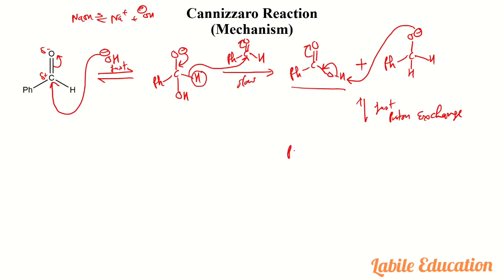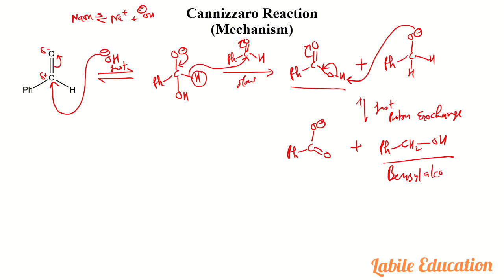We get the carboxylate ion and the alcohol, which is Ph-CH₂OH — benzyl alcohol. Because the medium is alkaline, the carboxylate forms sodium benzoate. This is the basic mechanism of the Cannizzaro reaction.